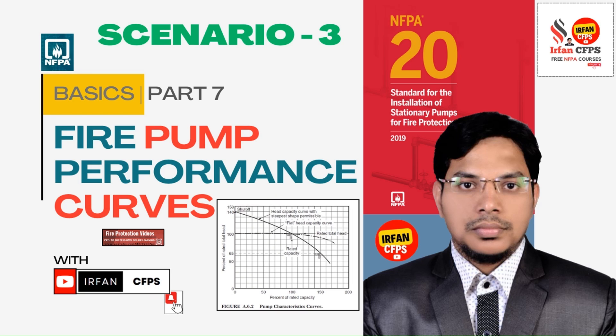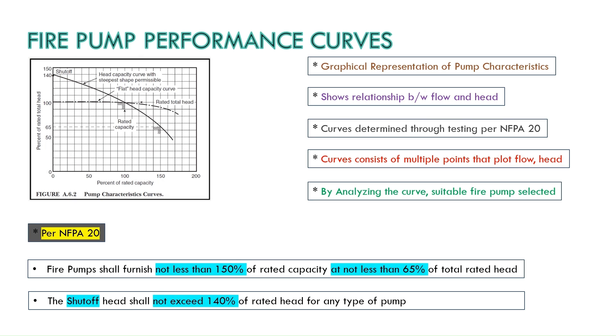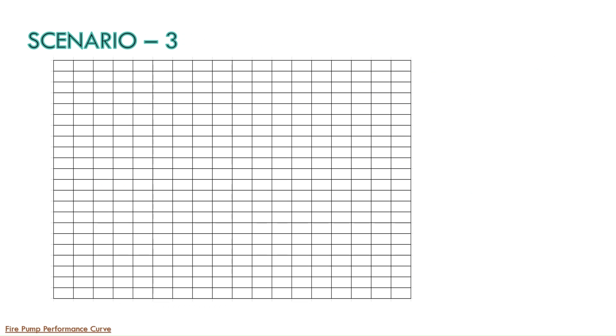Hello everyone, today will be an interesting session since we are going to consider Scenario 3 in order to draw the fire pump performance curves. We are going to skip this particular portion since it was already discussed in our earlier video. So we are going to look at Scenario 3 and consider one example. As you can see on your screen, the water supply is from an above ground water tank and the static pressure available is 33 psi, and the building is protected with a wet pipe sprinkler system.